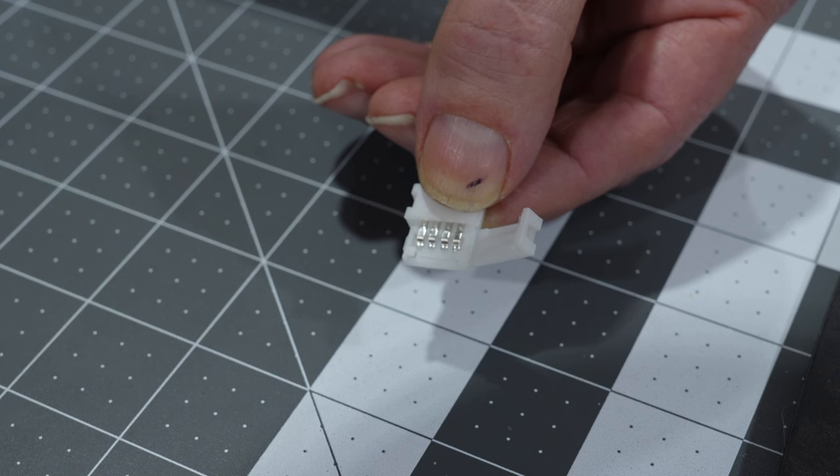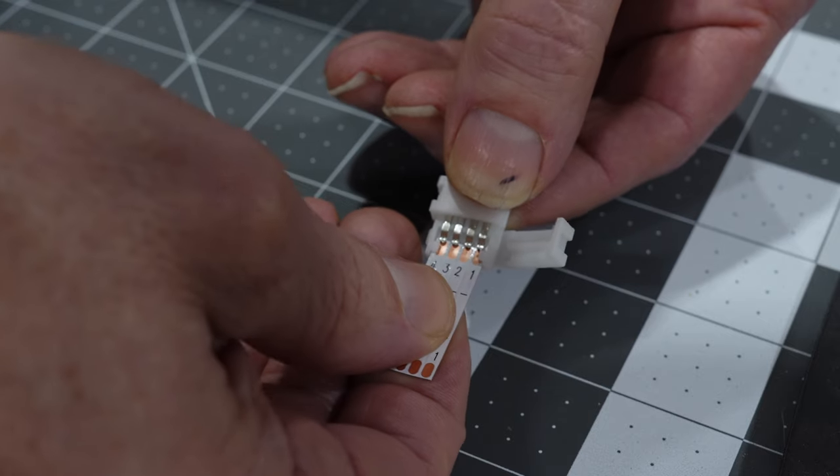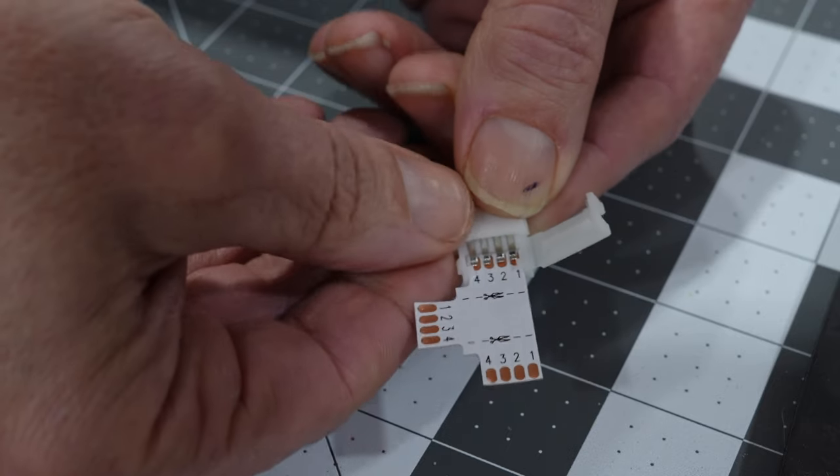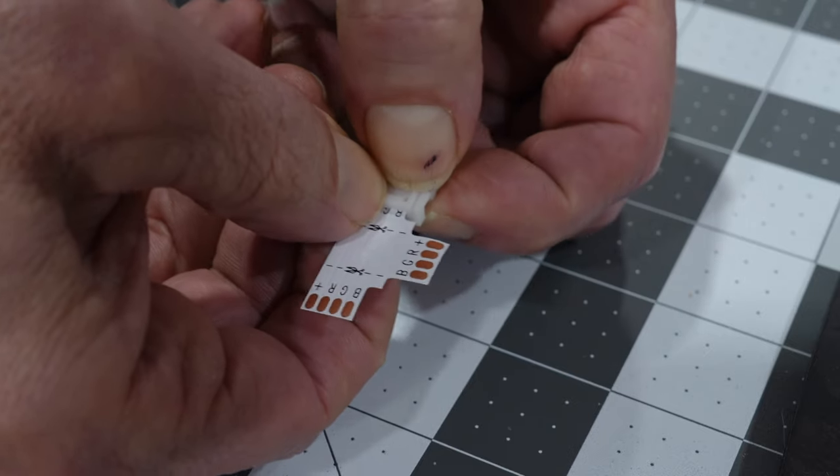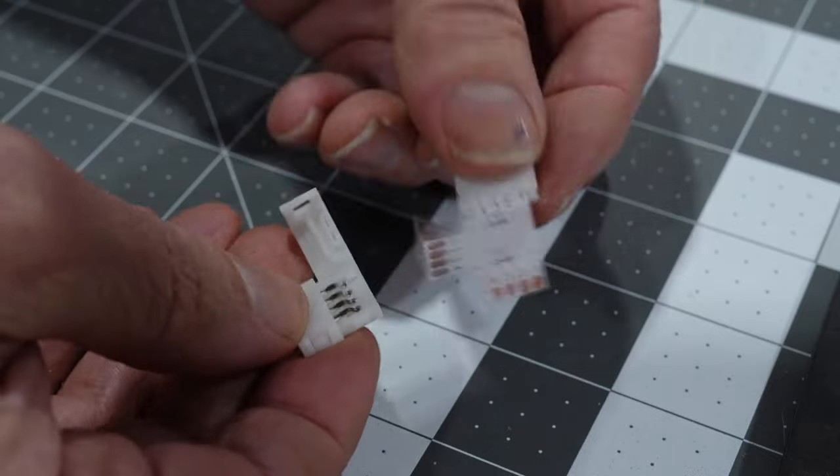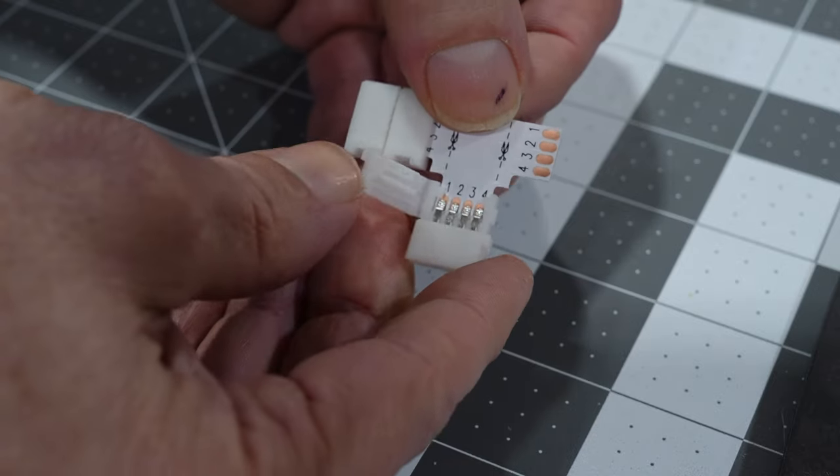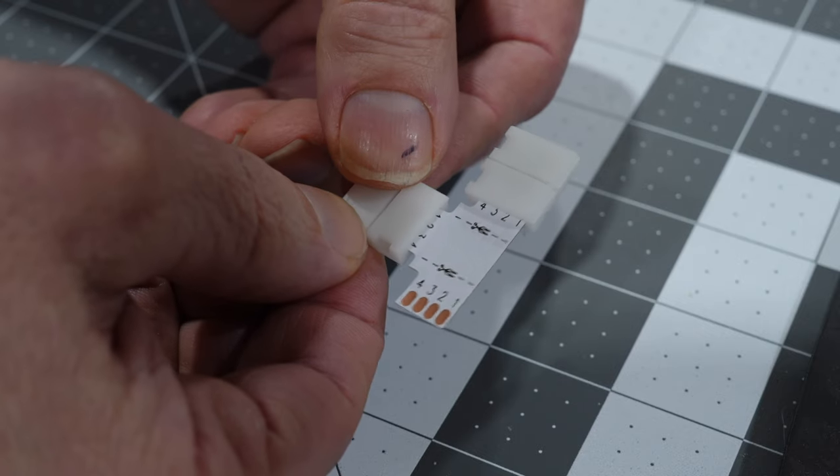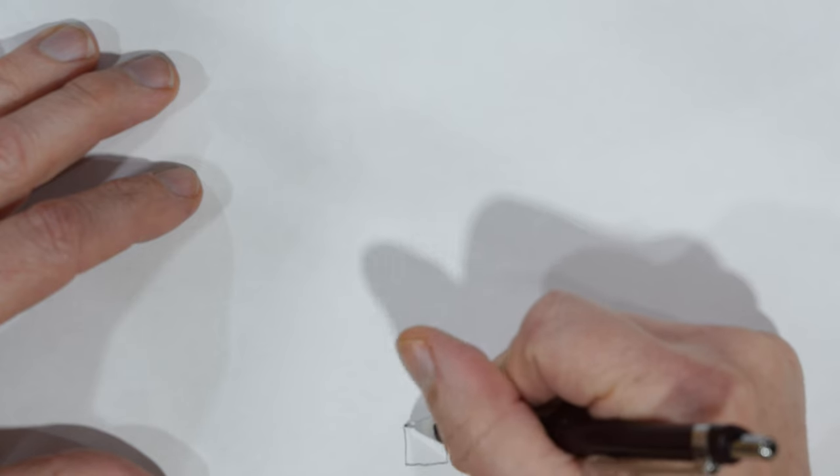To splice all the LEDs together, I am using some T-shaped strip connectors. I thought I might have to solder all the connections until I found these. When connecting them, I made sure the exposed copper slid under the pins, as well as keeping the polarity the same down the line. Here is an illustration of the wiring schematic.